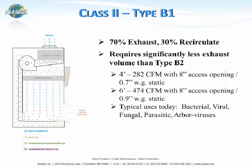If you work in the front half of the work zone, it functions more like an A2 cabinet with recirculation of the airflow. The benefits of a B1 cabinet are that it gives you some of the advantages of a B2 in the back half of the work zone, while being much easier to connect to exhaust systems, as it requires significantly less exhaust volume than a B2. The CFM and static pressure requirements of a B1 are a lot less than those of a B2 cabinet.